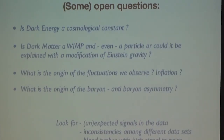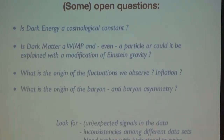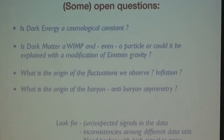Some typical questions we want to answer: Is dark energy the cosmological constant of Einstein — where the pressure is exactly minus the energy density? Is dark matter a weakly interacting massive particle, or something else like a modification of gravity? What is the origin of the fluctuations we observe — were they produced during inflation? And what is the origin of the baryon-antibaryon asymmetry? These are fairly fundamental questions that pertain not only to cosmology but to various fields of physics.